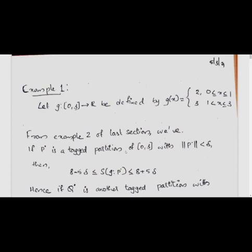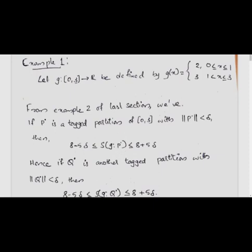We have seen that if P̊ is a tagged partition of the closed interval [0, 3] with norm ||P̊|| < δ, then 8 − 5δ ≤ S(g, P̊) ≤ 8 + 5δ.